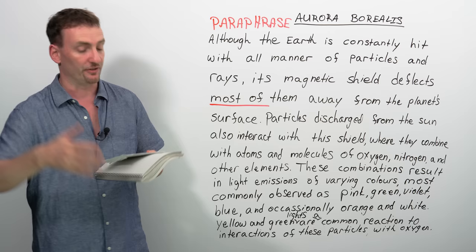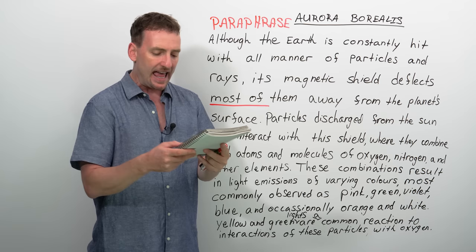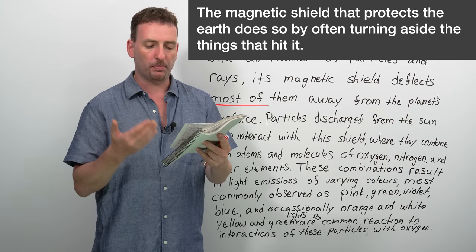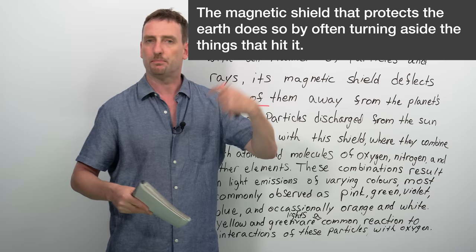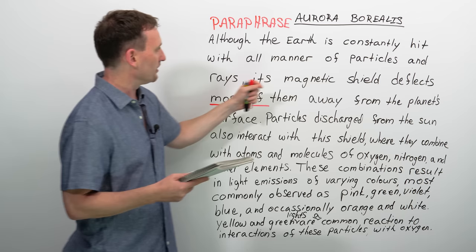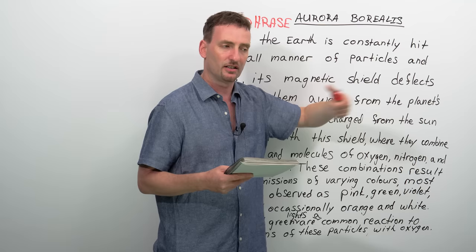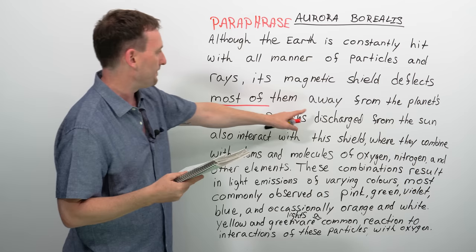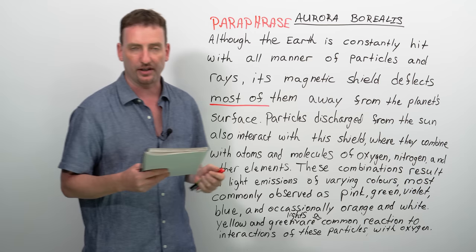The last one is going to be true. Statement: 'The magnetic shield that protects the Earth does so by often turning aside the things that hit it, like particles, rays, etc.' We're talking about the magnetic shield — it protects the Earth. In the passage: the magnetic shield deflects. Deflects and 'turning aside' are synonyms — same idea. Its magnetic shield deflects most of them — particles, rays, and all the other things hitting it. So this one is true. It's just a very direct paraphrase.